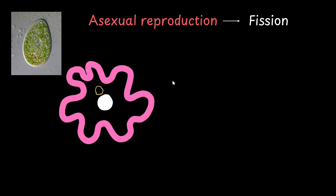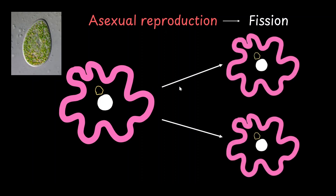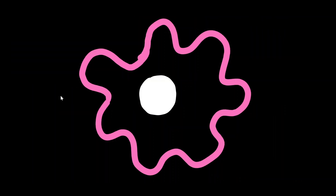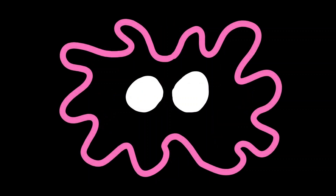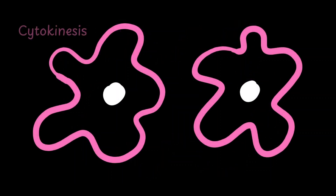Specifically in protozoans, asexual reproduction occurs through a process called fission. Fission is when a single parental organism divides to give two daughter cells. During the fission process, it starts with the division of the nucleus, which is called karyokinesis, and then it is followed by the division of the cytoplasm, called cytokinesis.